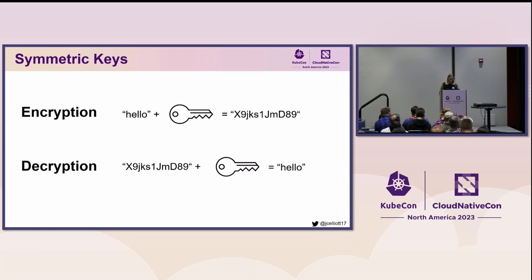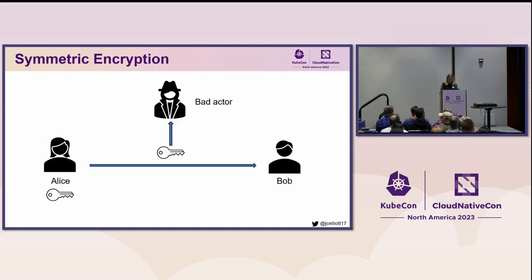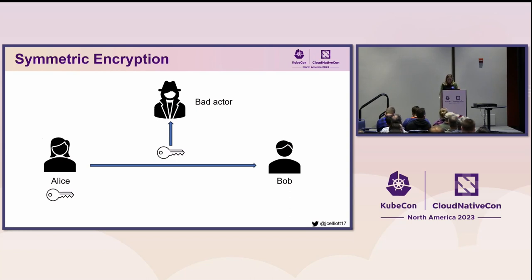One type of encryption relies on the use of symmetric keys. Data is encrypted — translated from plain text to cipher text — and decrypted back to plain text using the same key. This type of encryption is fast and great for large amounts of data. However, one challenge of symmetric keys is securely sharing the key. In this scenario, we have a client and server, Alice and Bob. They must have the same key to securely encrypt and decrypt their communication. Any bad actor with access to your network can potentially obtain the key while it's being shared and use it to decrypt any future communication between Alice and Bob.